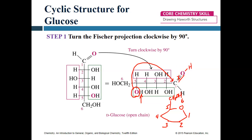So now we have an OH group and an H group on this first carbon. In these ring structures, we can refer to alpha or beta. Alpha or beta just depends on where that OH group is on the first carbon. If it is in the downward position, we call that structure alpha — it would be alpha D-glucose. If that OH is in the up position, we call that beta — it would be beta D-glucose.